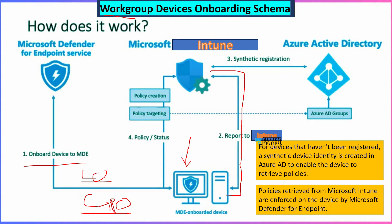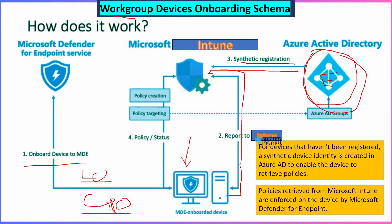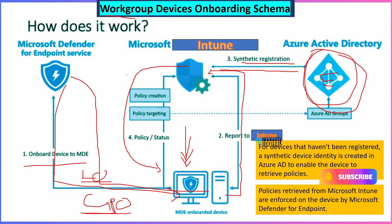Once a workgroup joined device is reported back to Intune, a synthetic registration of that device will happen with Azure Active Directory or Entra. Synthetic registration is nothing but a dummy registration until the device is fully registered with Azure AD. Once the device is fully registered, the synthetic device ID will get automatically removed. Then the device can receive policies from Intune, and once the policies are delivered, the policy enforcement will be done by MDE — not by Intune. That is the main difference.